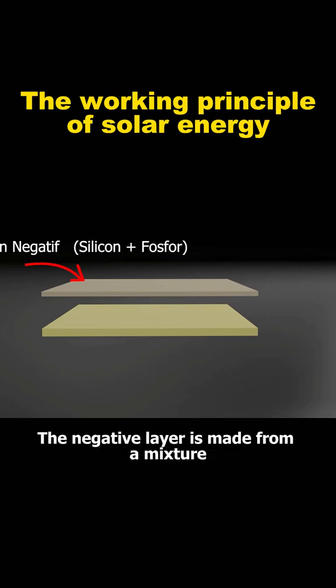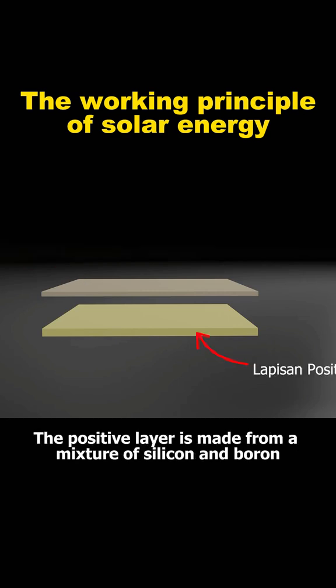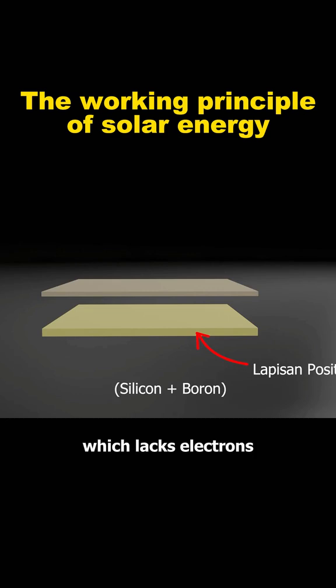The negative layer is made from a mixture of silicon and phosphorus, which gives it an excess of electrons. The positive layer is made from a mixture of silicon and boron, which lacks electrons,